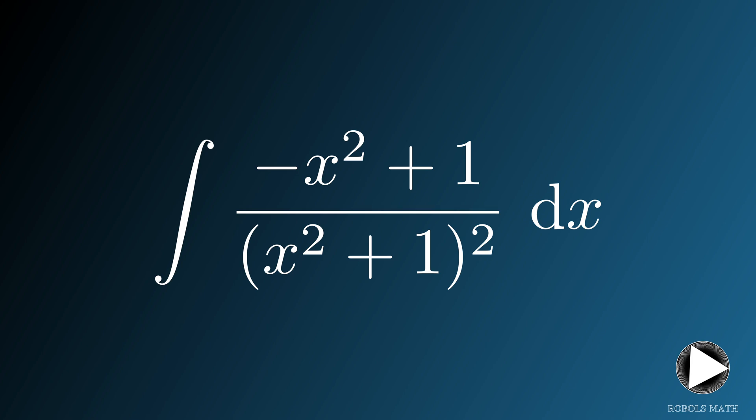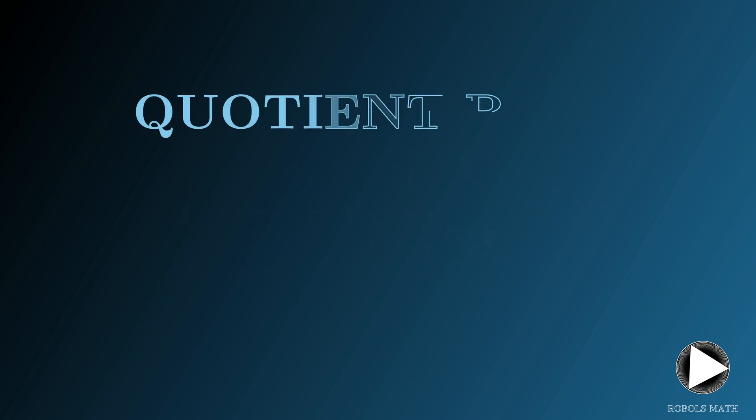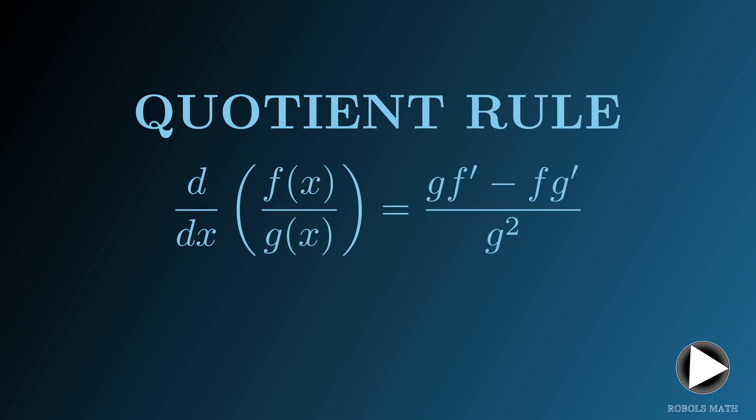Before we actually discuss the solution for the integral at hand, let's first look back at what the quotient rule for differentiation is. From our Calculus 1 class, we've been taught that the derivative of the quotient of two functions f and g is given by g times f prime minus f times g prime, all over g squared.